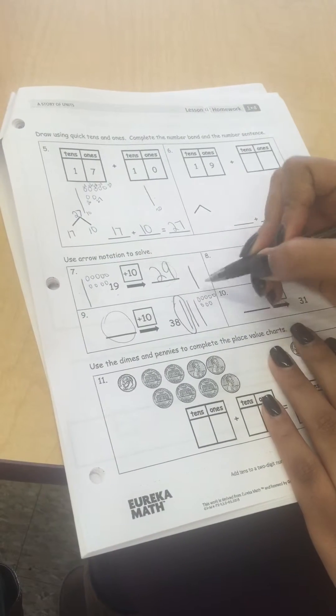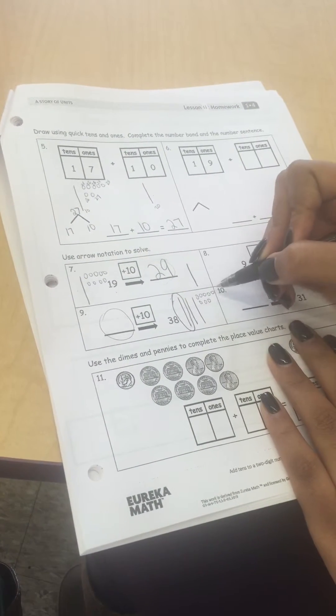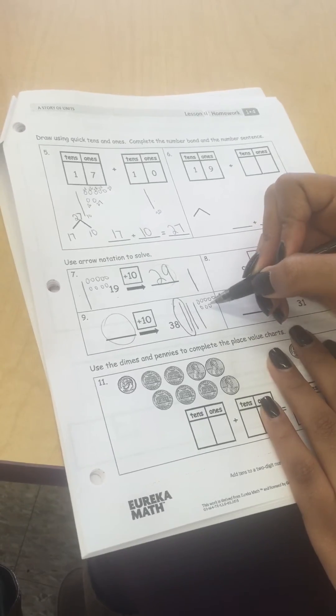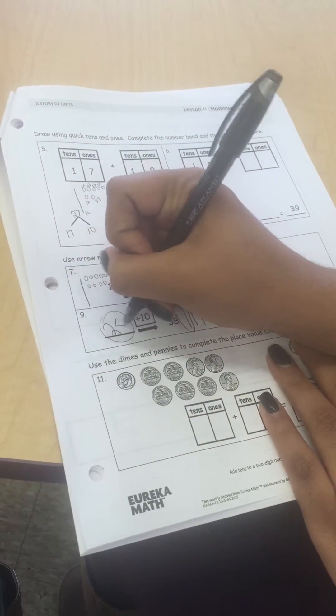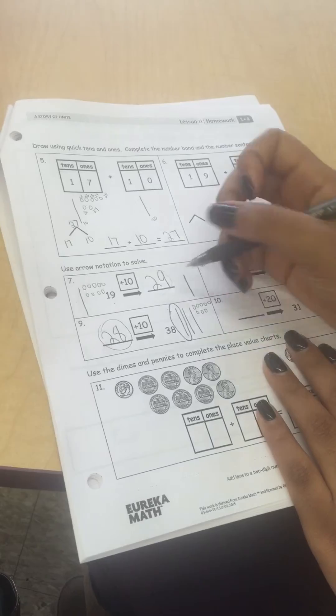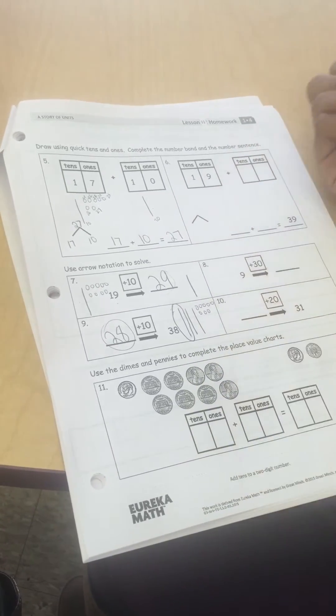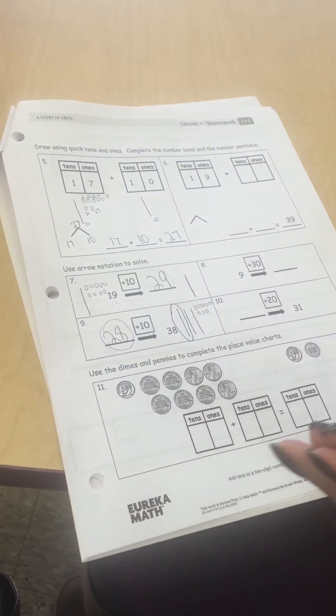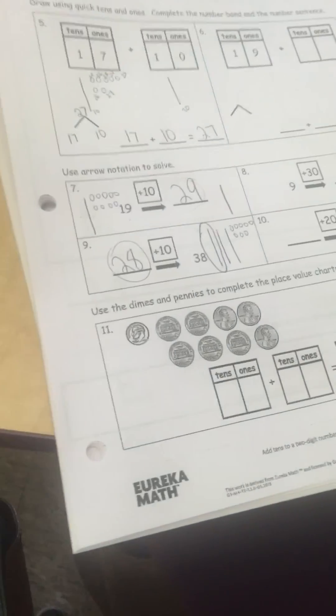The part that is not circled is what we started with: 10, 20, 21, 22, 23, 24, 25, 26, 27, 28. We started with 28. You can choose to have your scholar cross it off if you'd like. They just need to know what they started with and the part that they did add on.